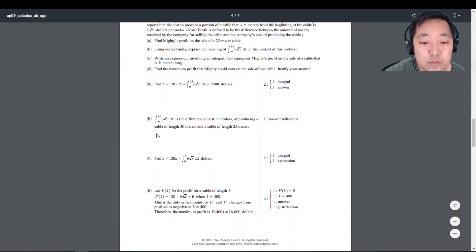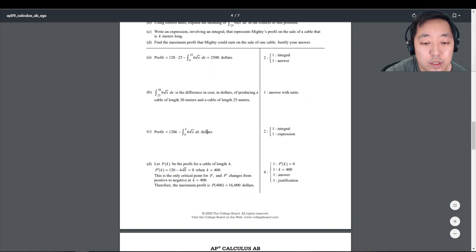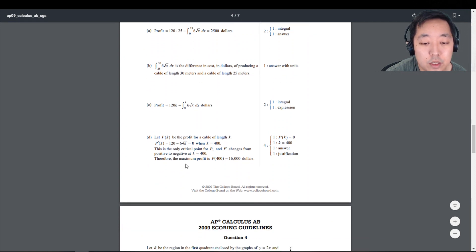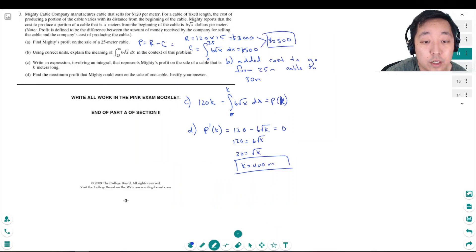$2,500, difference in cost of producing a cable length of 30 meters and 25 meters profit. Is that good? Oh, I didn't calculate the actual maximum profit.